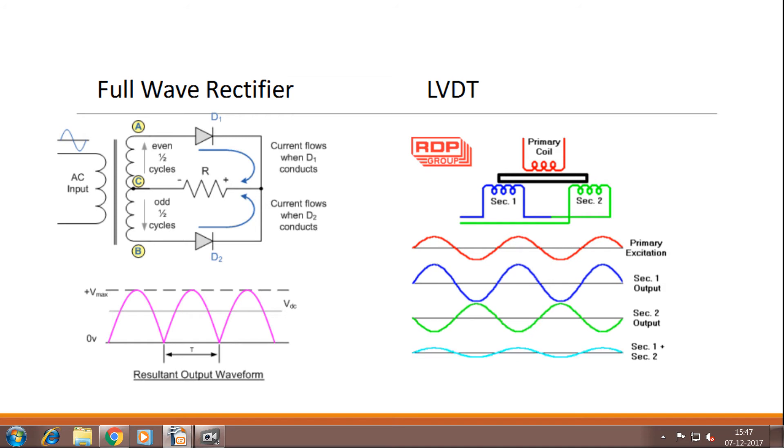Similarly below to this diagram, resultant output waveform is drawn properly so that you can refer for your exam diagram. So once your diagram is self-explanatory, you can explain hardly in 4 to 5 points, you will get full marks.